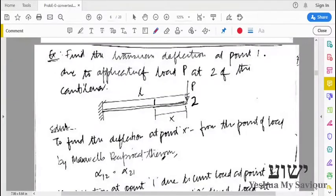Good day. We want to find the transverse deflection at point 1, which is this point, due to application of load at point 2, which is this point, in a cantilever beam.